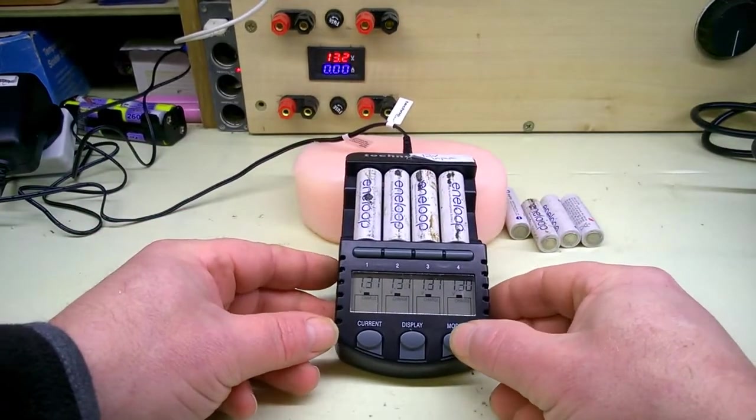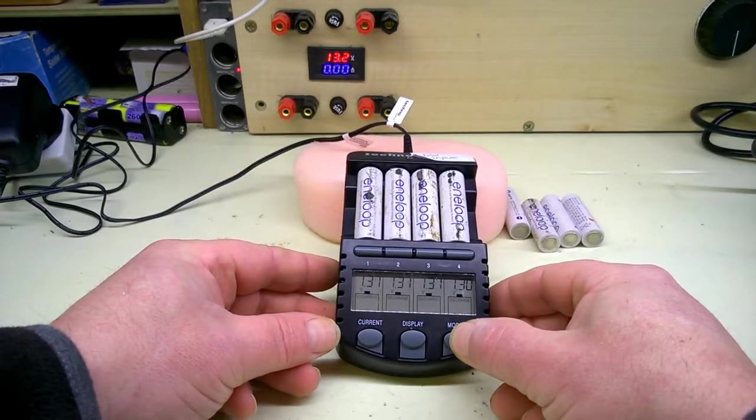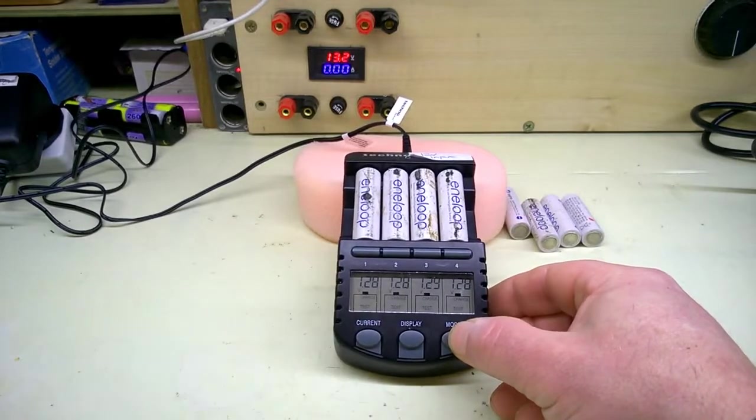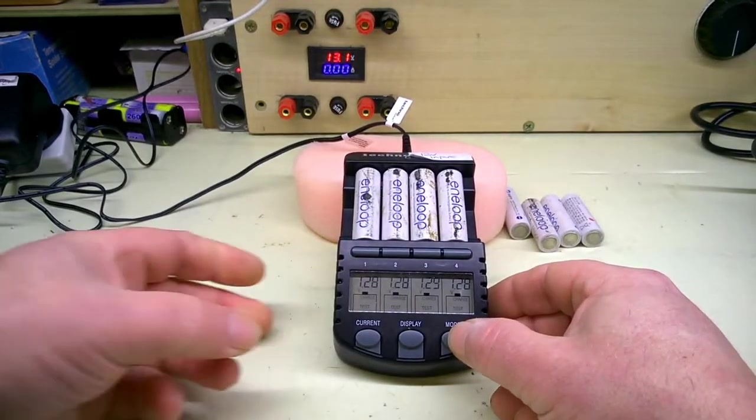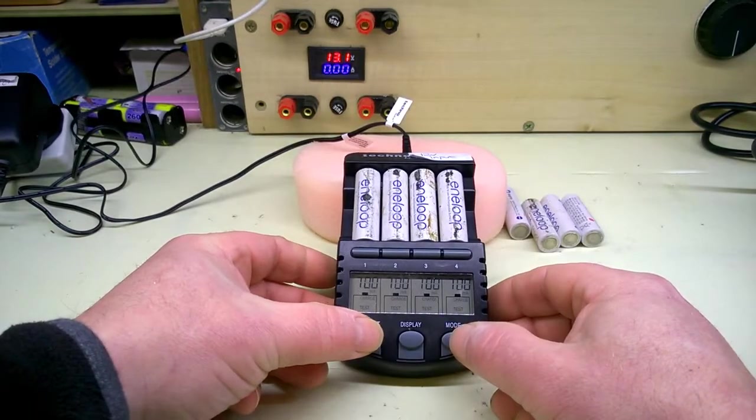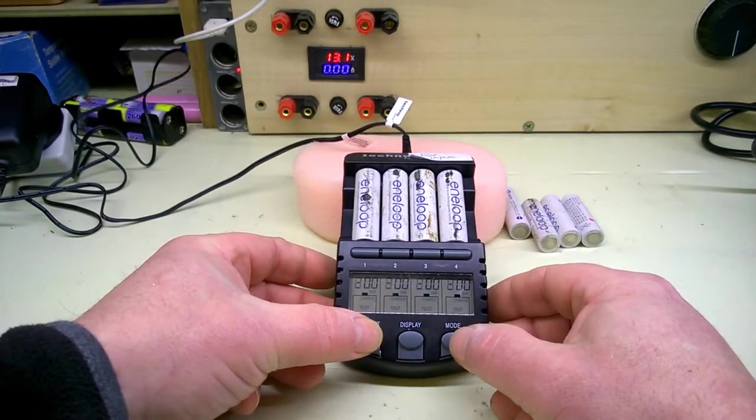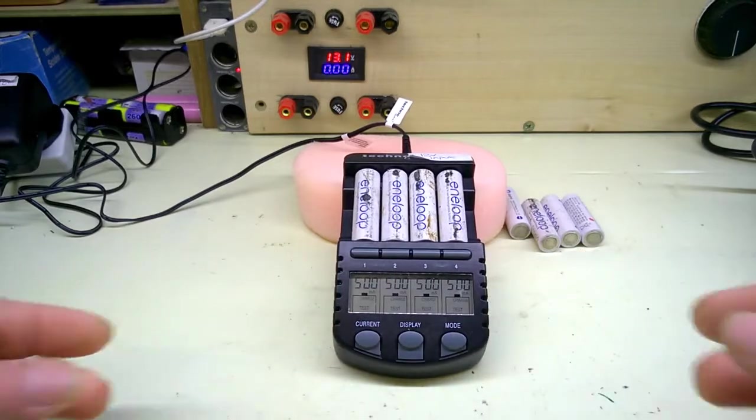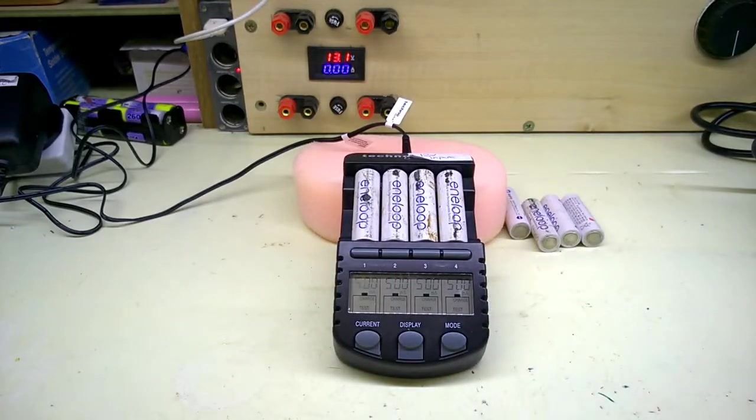Same as I did last time, hopefully. Set the mode - discharge, charge test. Set the current - 500. There we go, are we happy with that? Good. Back in about 14 hours when they're done.